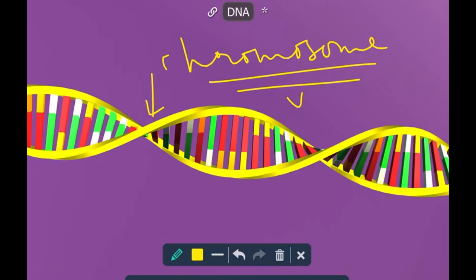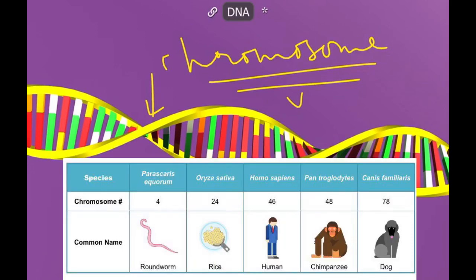However, our chromosome number differs from a dog's chromosome number. Like, human beings have 46 chromosomes. Onion has got 16 chromosomes. Rice has got 24 chromosomes, and dogs have got 60 chromosomes. But two humans will always have 46. Two onions will always have 16 chromosomes.